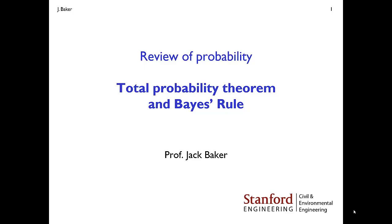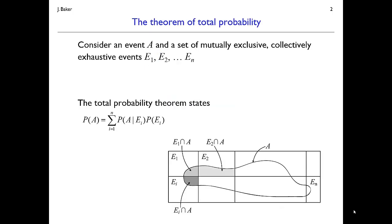In this video, we'll discuss the total probability theorem and Bayes' rule, which are two calculations that utilize set theory and conditional probabilities in some convenient ways for a number of types of calculations. So let's talk about the total probability theorem first, or the theorem of total probability.